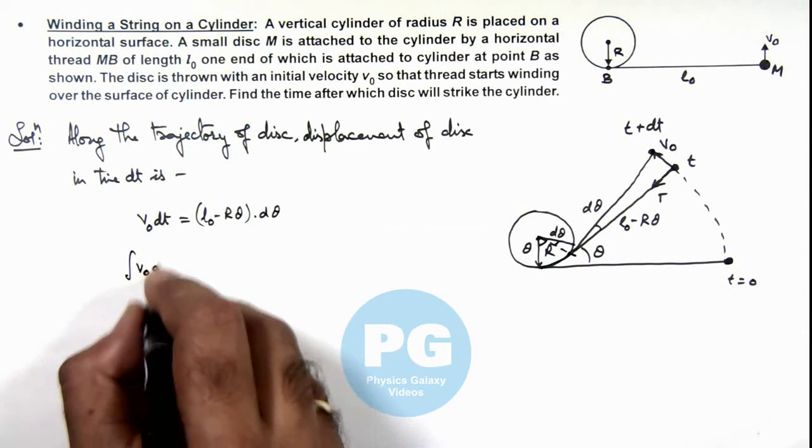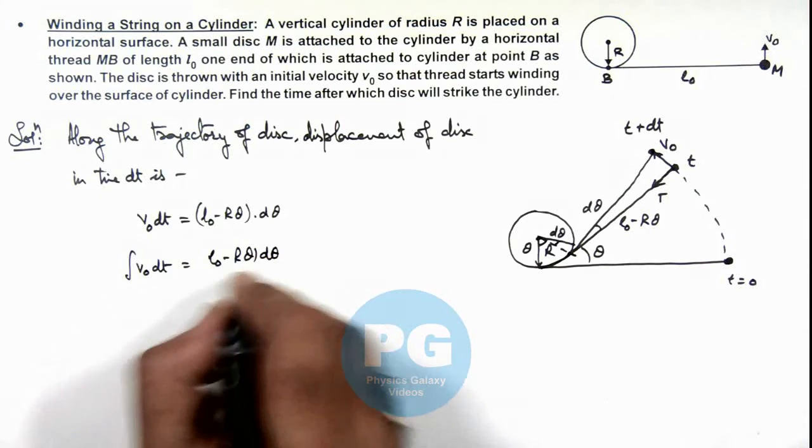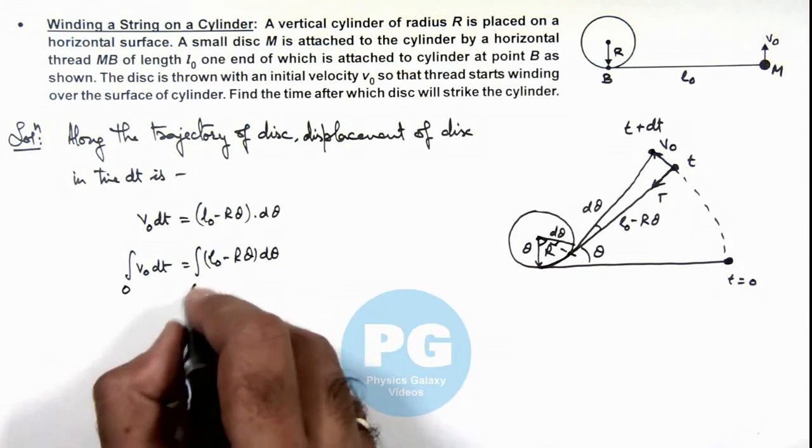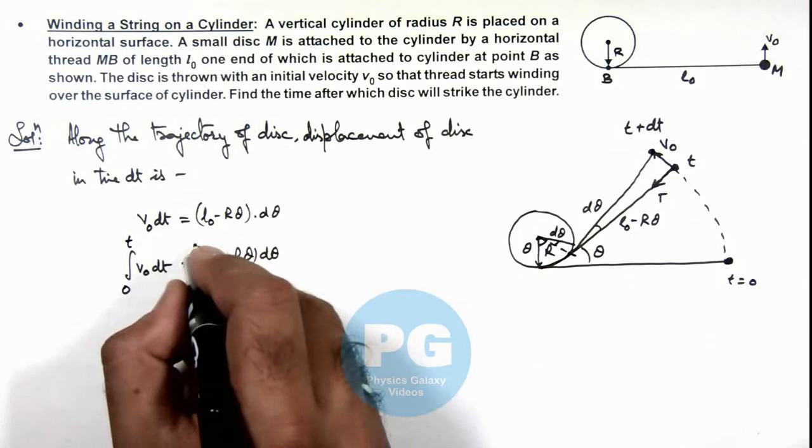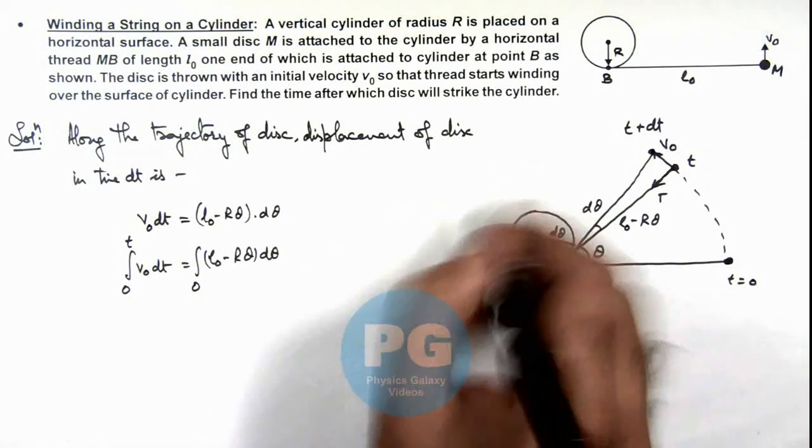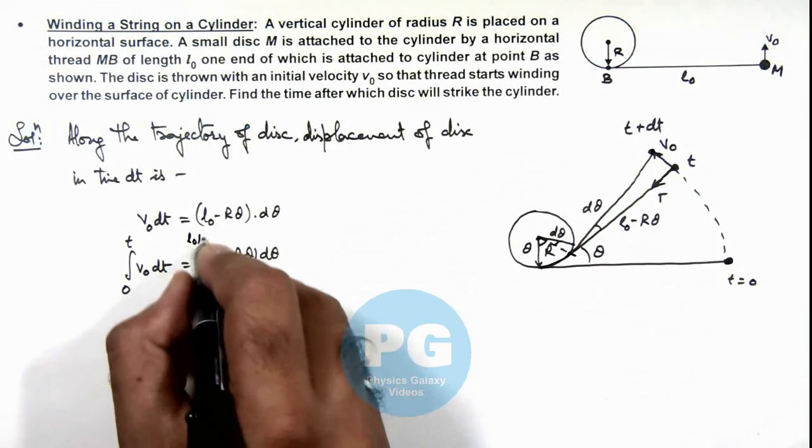v₀dt is L₀ - Rθ dθ, from t=0 when θ was zero, and at a general time t, θ changes to the whole angle to which the string will revolve on this cylindrical surface, that will be L₀/R.